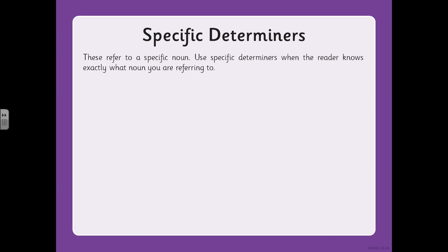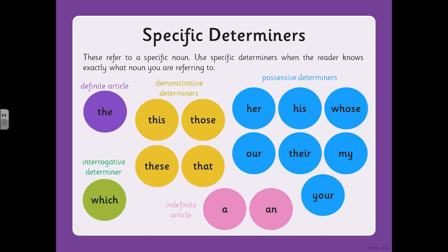There are two main types of determiner. The first type is specific determiners. These refer to a specific noun. Use specific determiners when the reader knows exactly what noun you are referring to. There's a whole bunch of them here — have a little read of those. There's going to be a question coming up later where you need to put a specific determiner into a sentence, so you can either write these down or rewind the video and come back to this page if you need it.